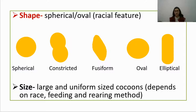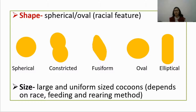Different shaped cocoons exist, and this is again a racial feature depending upon the variety. Cocoons can be spherical, constricted, fusiform, oval, or elliptical. Oval or spherical cocoons are generally preferred because they are easy to reel.